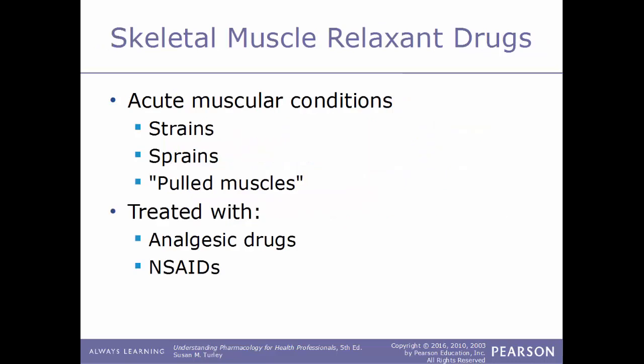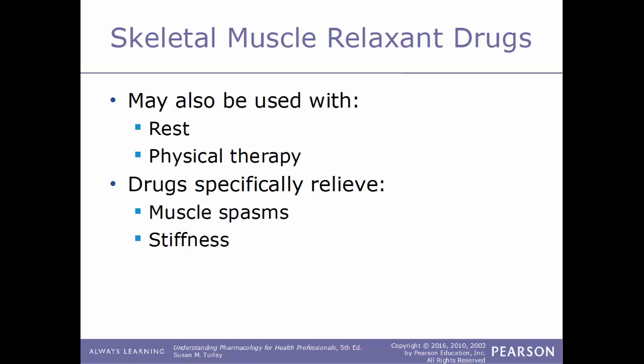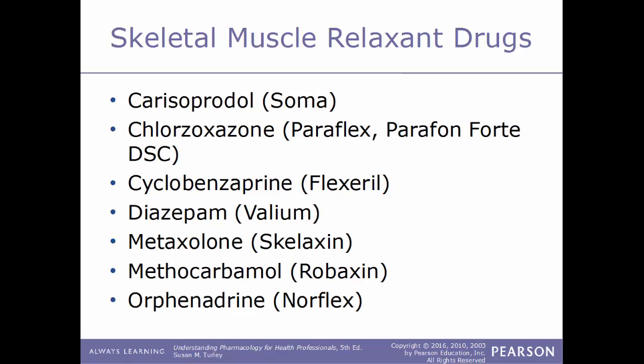Next, skeletal muscle relaxant drugs. Some drugs in this category are used only for acute muscular conditions such as strains, sprains, or pulled muscles, treated alongside analgesics, NSAIDs, rest, and physical therapy. Drugs used for acute conditions specifically relieve muscle spasms and stiffness. Examples include carisoprodol known as Soma, chlorzoxazone known as Paraflex or Parafon Forte DSC, cyclobenzaprine known as Flexeril, diazepam known as Valium, metaxalone known as Skelaxin, methocarbamol known as Robaxin, and orphenadrine known as Norflex.